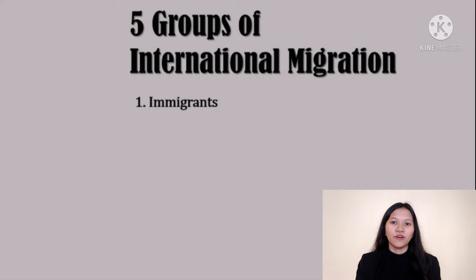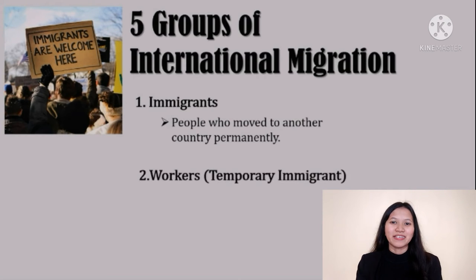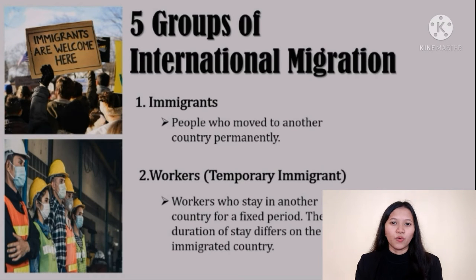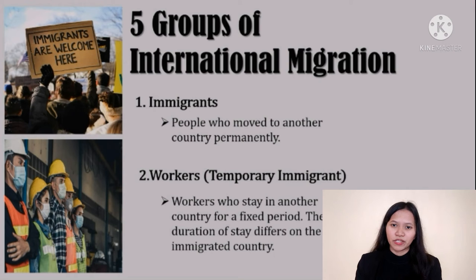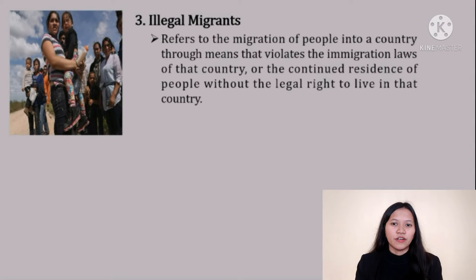There are five groups of international migration. First is immigrants — people who move to another country permanently. Second is workers or temporary immigrants — workers who stay in another country for a fixed period. The duration of stay differs by the destination country, at least six months in a year.